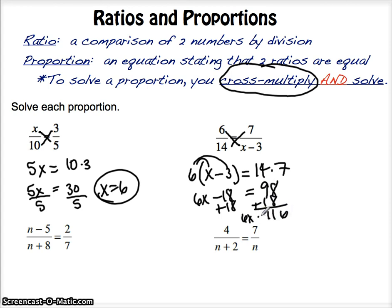You get 6x equals 116, and right there, when you divide, just reduce. You can leave as improper fractions, but reduce it. Let's see, 2 goes in 58 times, 2 goes into 6 3 times, so 58 thirds.